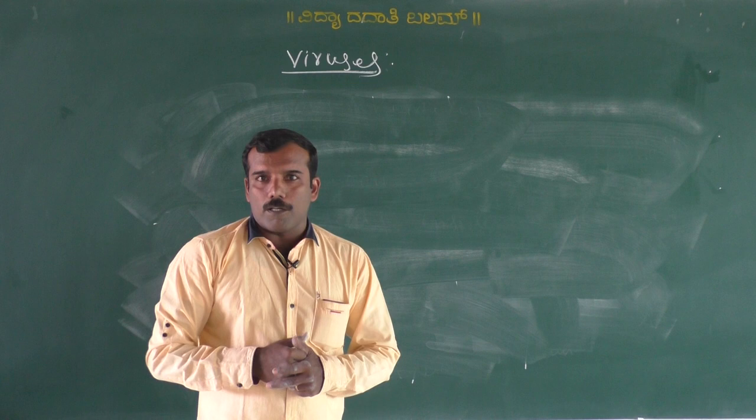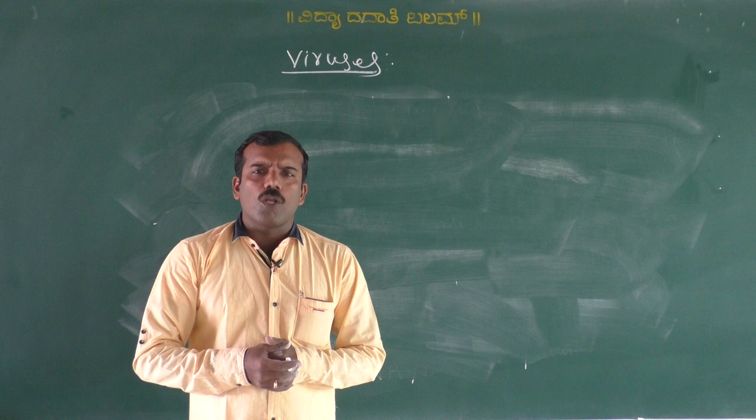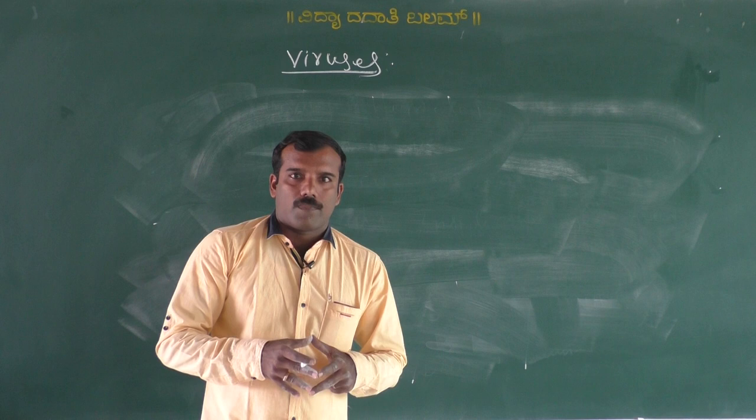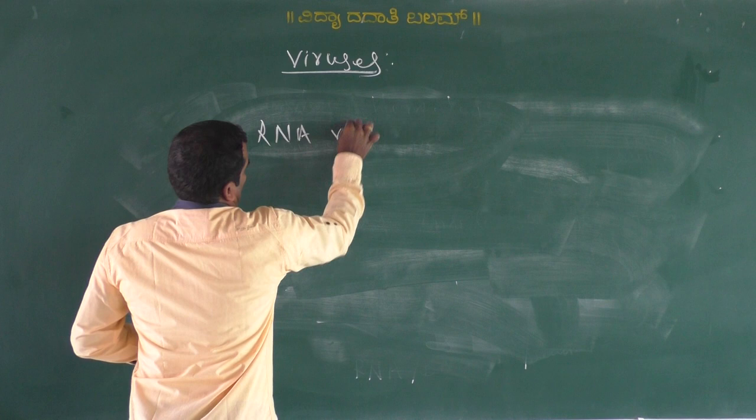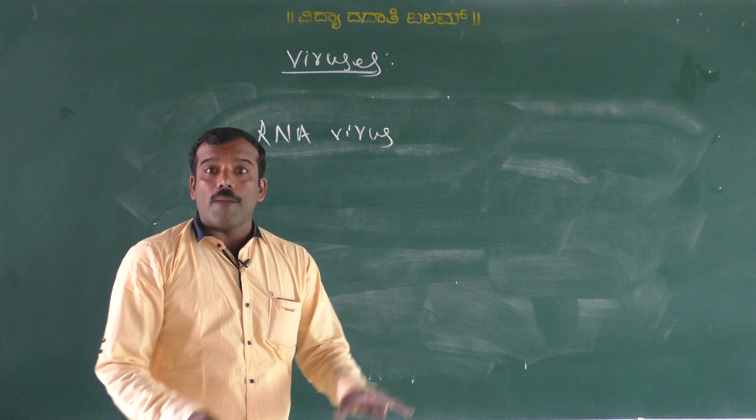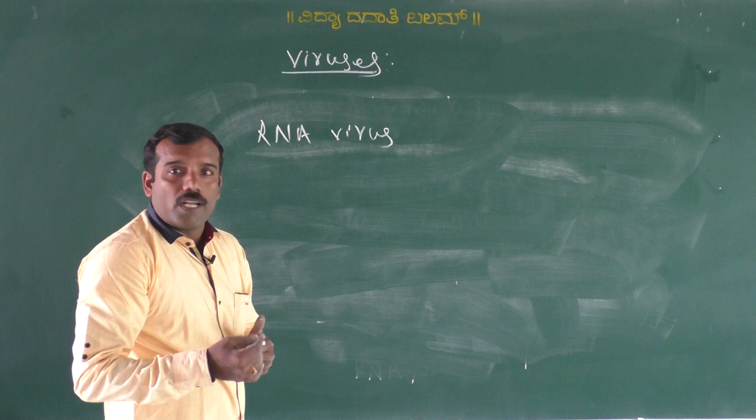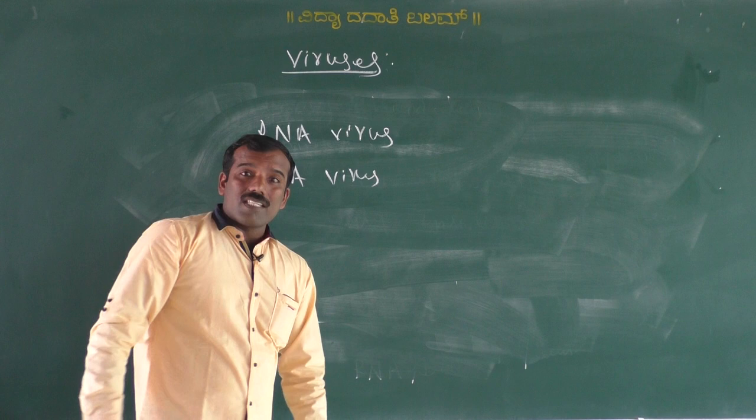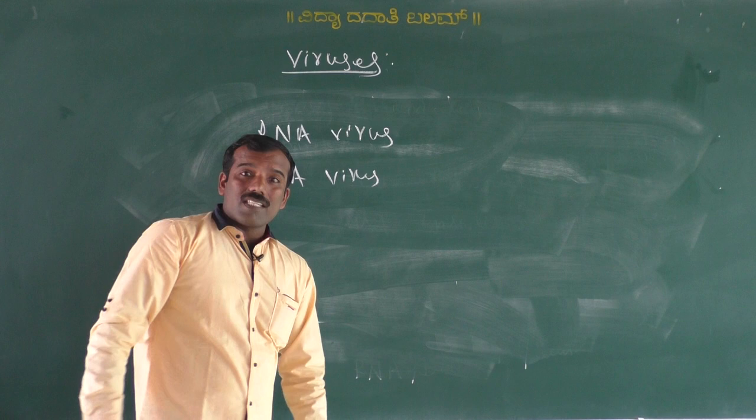Viruses are classified based on the type of nucleic acid. If the virus has RNA as genetic material, it is called an RNA virus or ribovirus. If the virus has DNA as genetic material, it is called a DNA virus or deoxyribovirus.